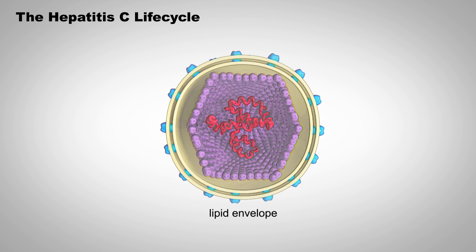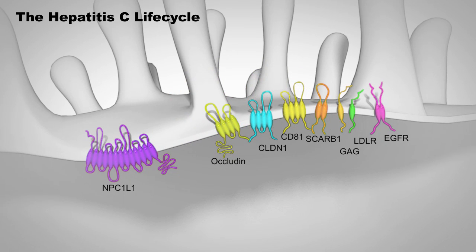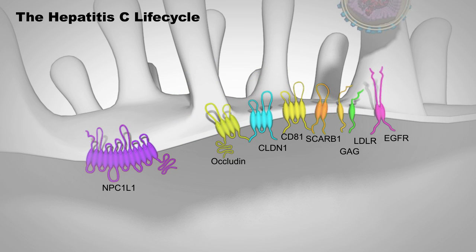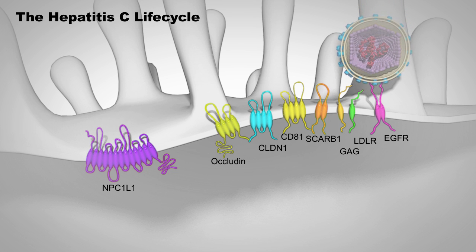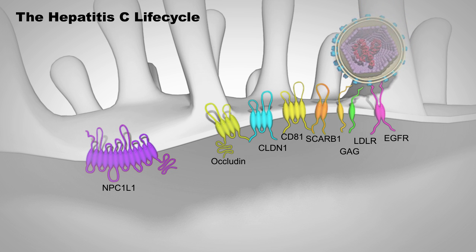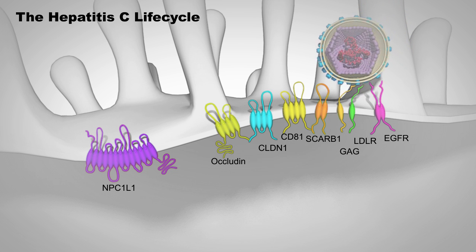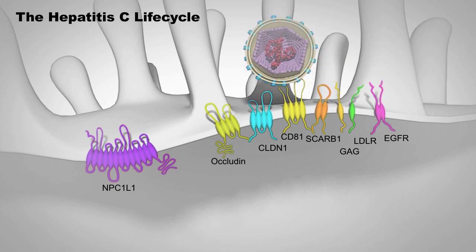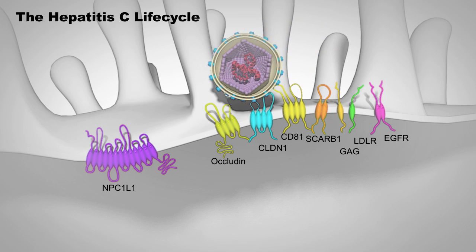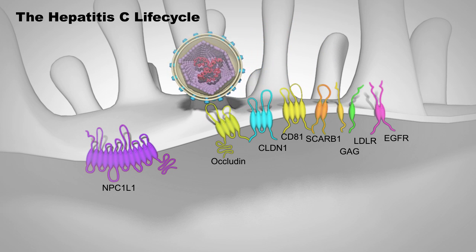Although the exact mechanisms of HCV cell entry are still unknown, it is thought that the envelope proteins on the surface of the virus bind to host CD81 and other cellular molecules, allowing HCV internalization.